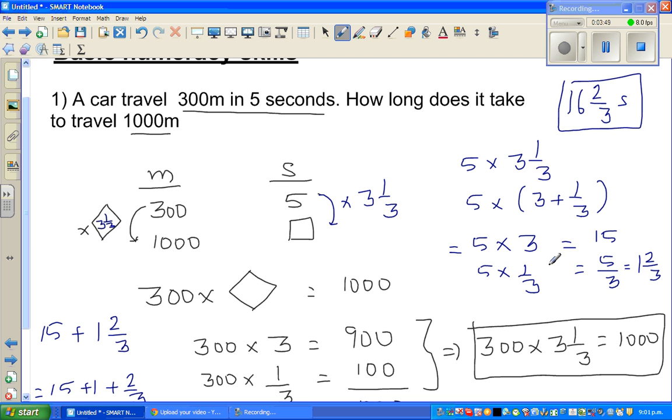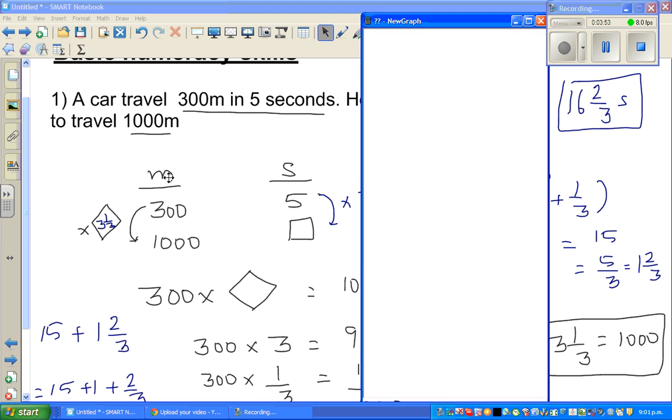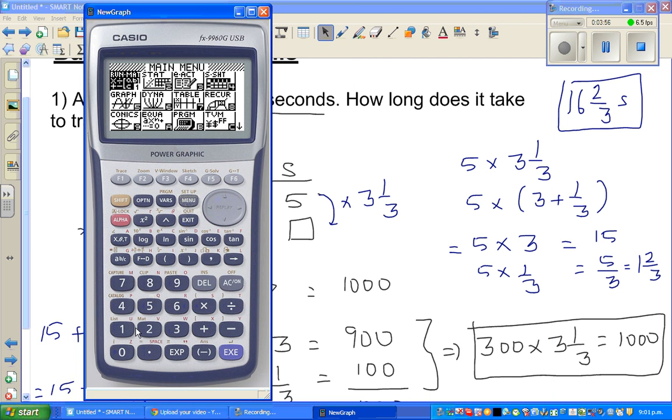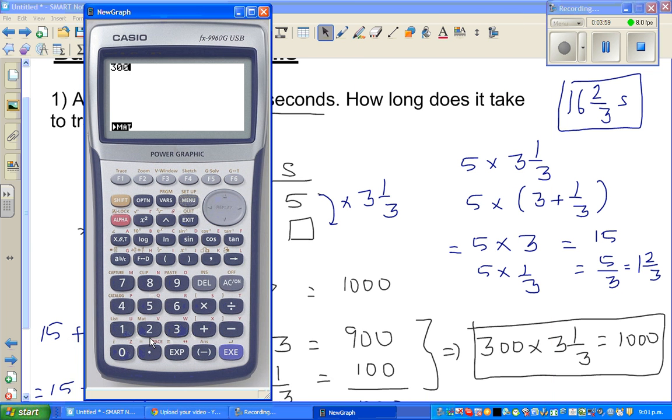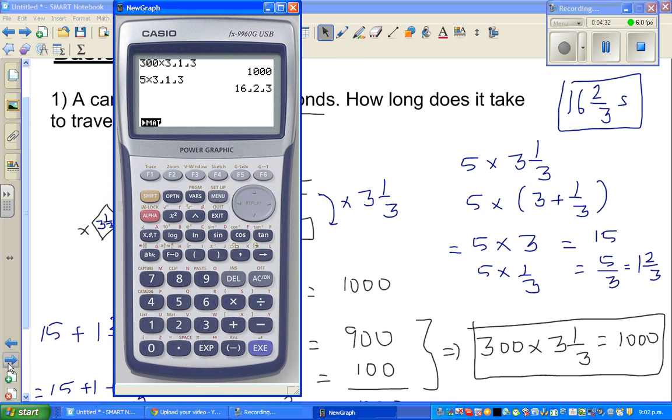I'll show you this on a calculator to explain this. So I say that 300 times 3 and one third is 1000. And if you go 5 times 3 and one third, that is 50 thirds, and that you can change, which is 16 and 2 thirds is the answer. Okay, let me move on to the next question.